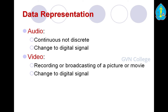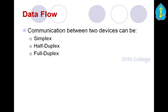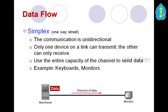The next important concept in networking is data flow. Data flow is the communication between two devices and can be in the form of simplex, half-duplex, or full-duplex. The first method is simplex — a one-way street. The communication is unidirectional; only one device on a link can transmit and the other can only receive. It uses the entire capacity of the channel to send data. Examples include keyboards and monitors — when a student presses a key it is transmitted to the CPU unidirectionally.